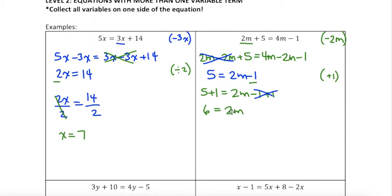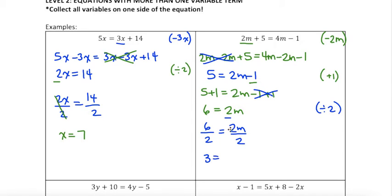The last step to isolate my variable is to get rid of this coefficient. Right now it's multiplying by 2. The opposite of multiplying by 2 is dividing by 2. So I have 6 divided by 2 equals 2m divided by 2. 6 divided by 2 is 3, and 2 divided by 2 is 1, so I'm left with just m. So we can move our variables to the right-hand side rather than the left, and you can see that works as well.